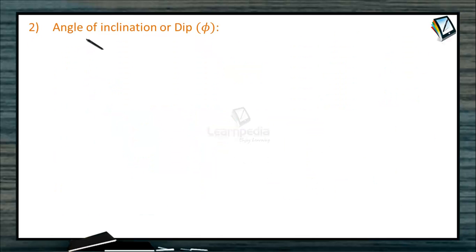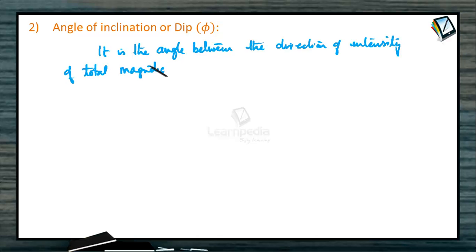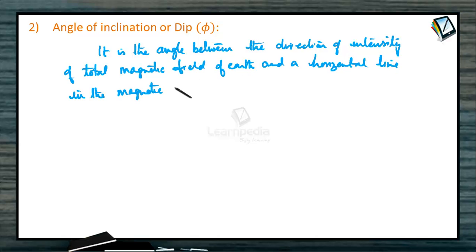The second element is angle of inclination or dip, phi. It is the angle between the direction of intensity of the total magnetic field of Earth and a horizontal line in the magnetic meridian.